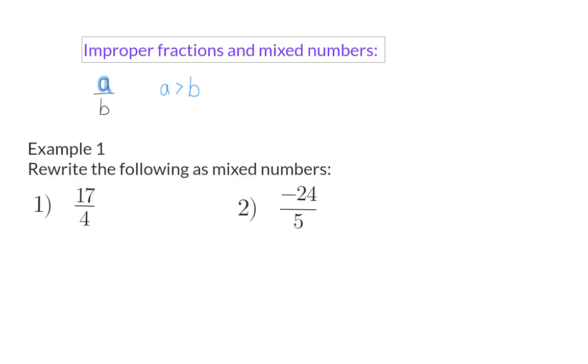Example 1. Rewrite the following as mixed numbers. Our first fraction is 17 over 4, and this means we want to form groups of 4. If we think about the multiples of 4, we have 4, 8, 12, and 16, which means we can form 4 complete groups of 4, and that means 4 integers.